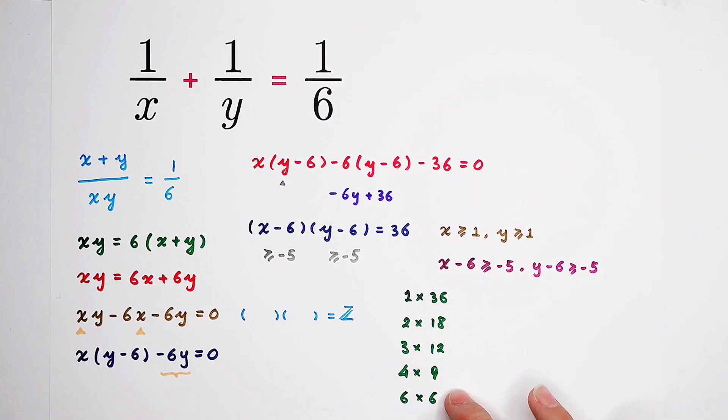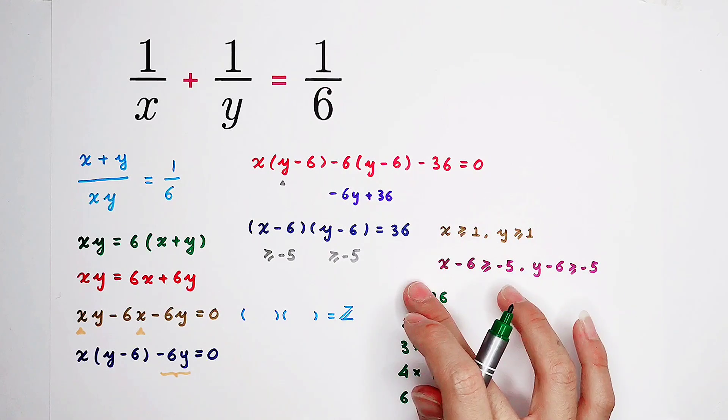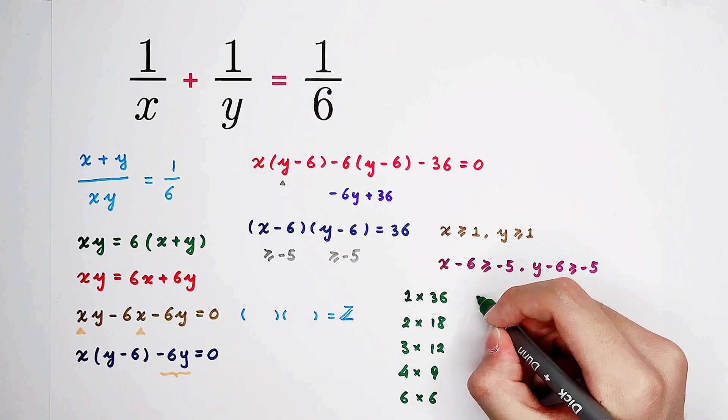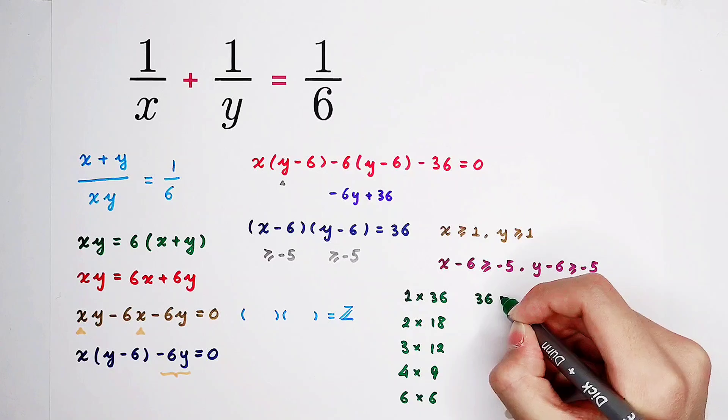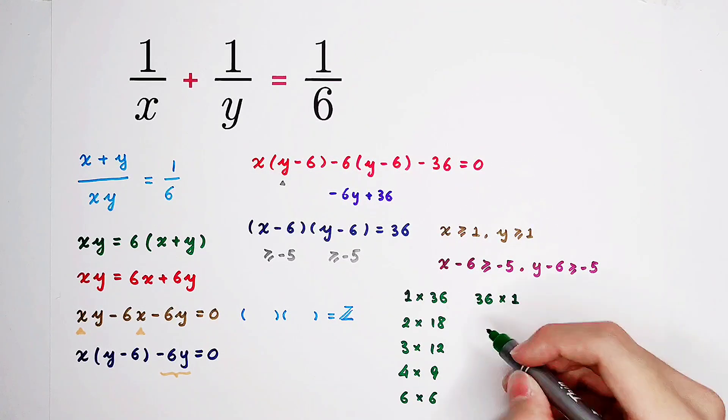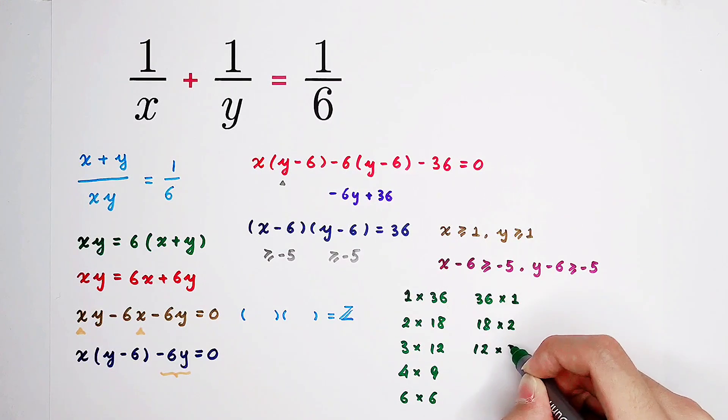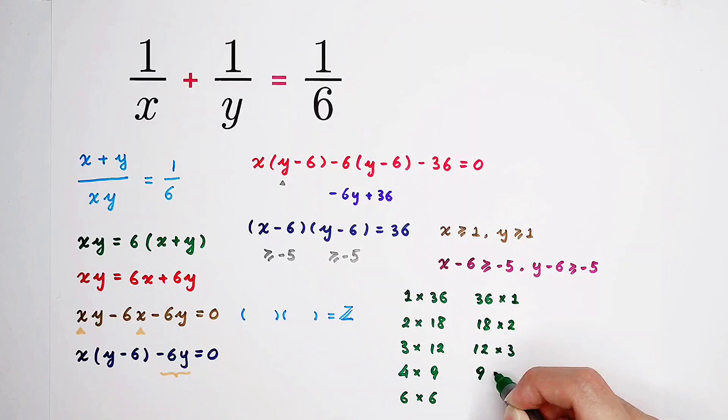These six numbers have one thing in common. Their first factors are always more or equal to their second factors. So that means, if we change their order, it's also going to be a pair. 36 times 1, 18 times 2, 12 times 3, 9 times 4, and 6 times 6, because 6 is equal to 6, so it's no use to write them again. How many cases do we have? 1, 2, 3, 4, 5, 6, 7, 8, 9. 9 cases, but I'm going to say only 5.